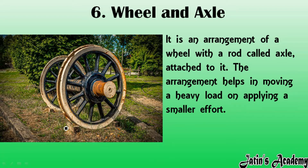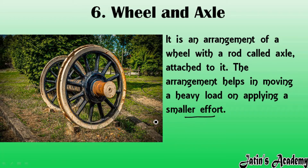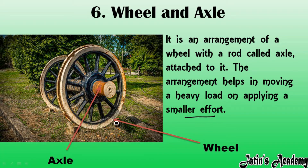Wheel and axle is an arrangement where a wheel is attached to one fixed support known as axle. This arrangement helps in moving a heavy load. In cars and automobiles also we are using this kind of wheel in order to move things. By applying even less effort on a heavy load, we can easily rotate and move a heavy load with the help of wheel and axle. The circular part is the wheel and the fixed point about which the wheel rotates is known as the axle.